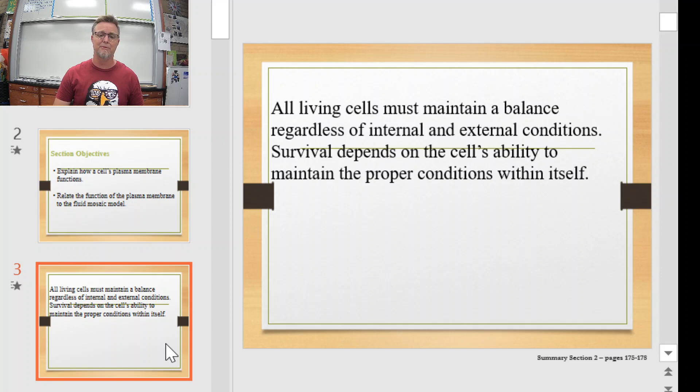Cells work the same way and it's more than just temperature. It's all the way down to molecules and ions and everything that's going in and out of the cell. It has to be kept at balance all the time. The survival of the cell depends on it. So how do we control what goes into and out of the cell?